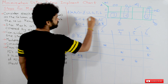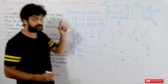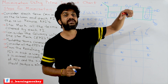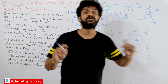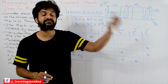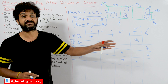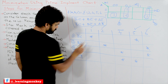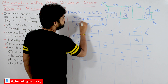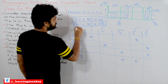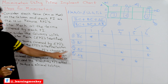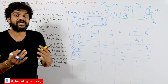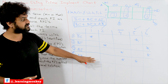Both solutions have the same number of terms and each term has the same number of literals, so both are minimal solutions. In our previous examples we got only one minimal solution because every prime implicant was an essential prime implicant. Here, with four prime implicants only three are needed, giving two equally valid minimal solutions — this is exactly why we use the prime implicant chart.